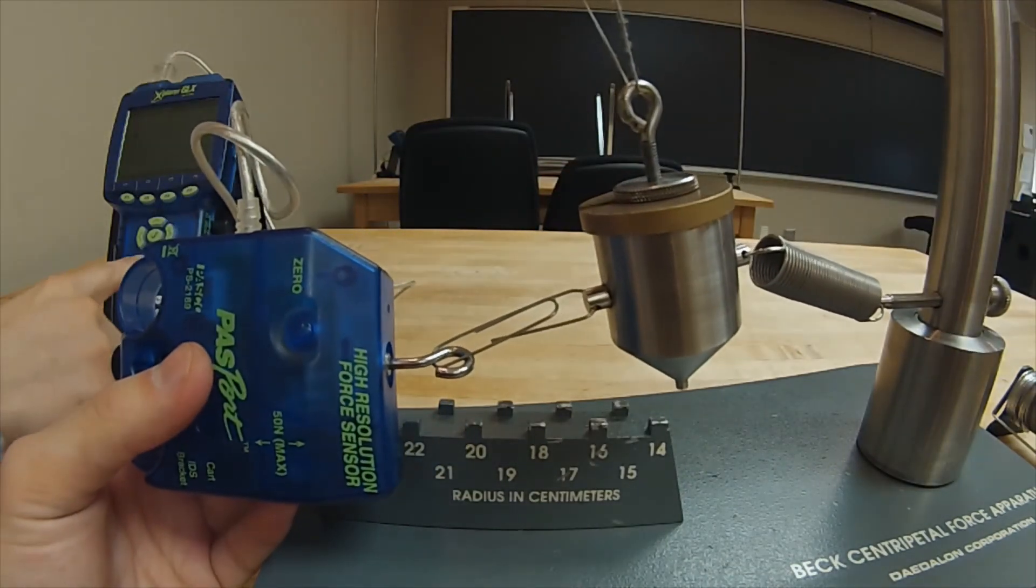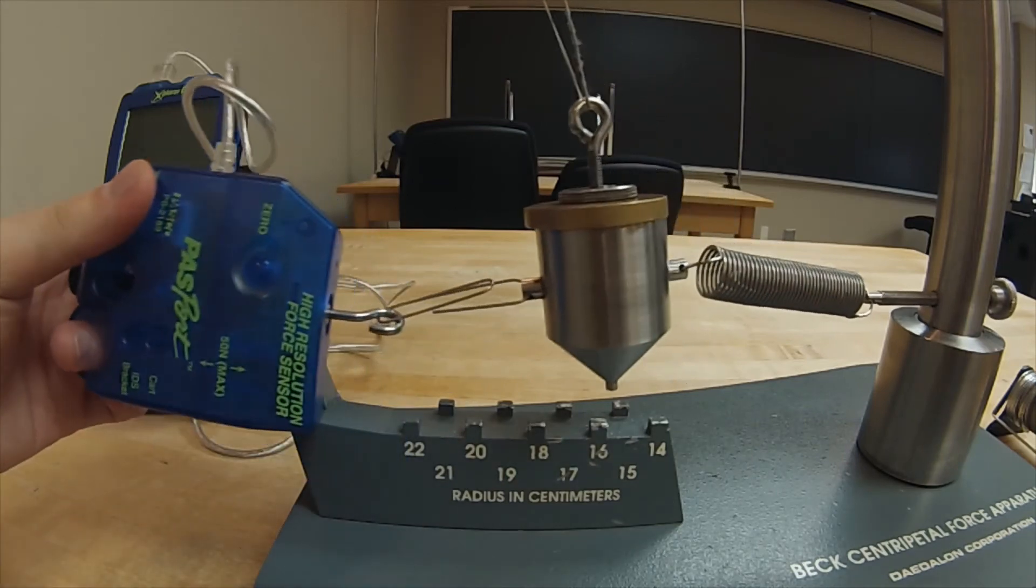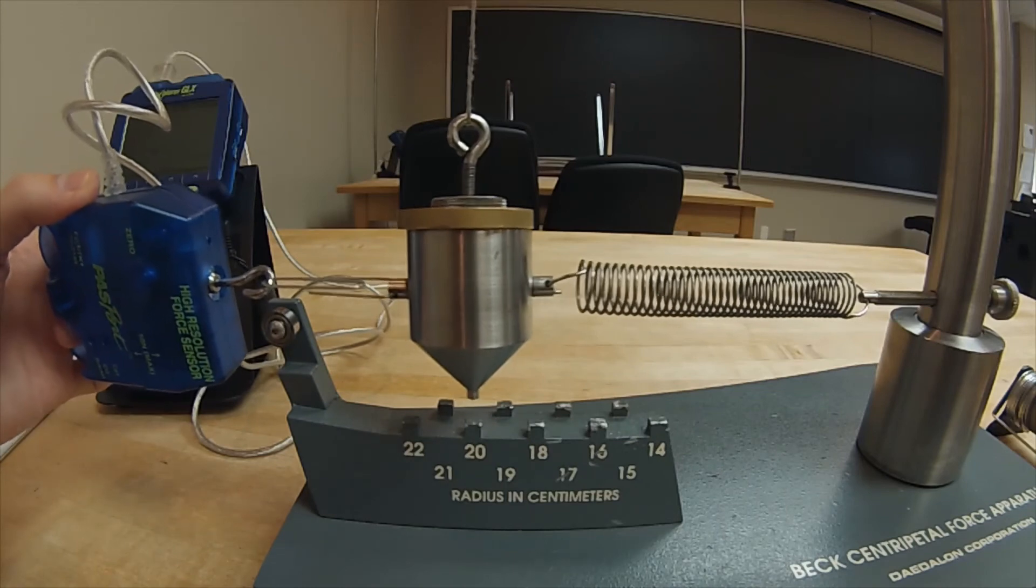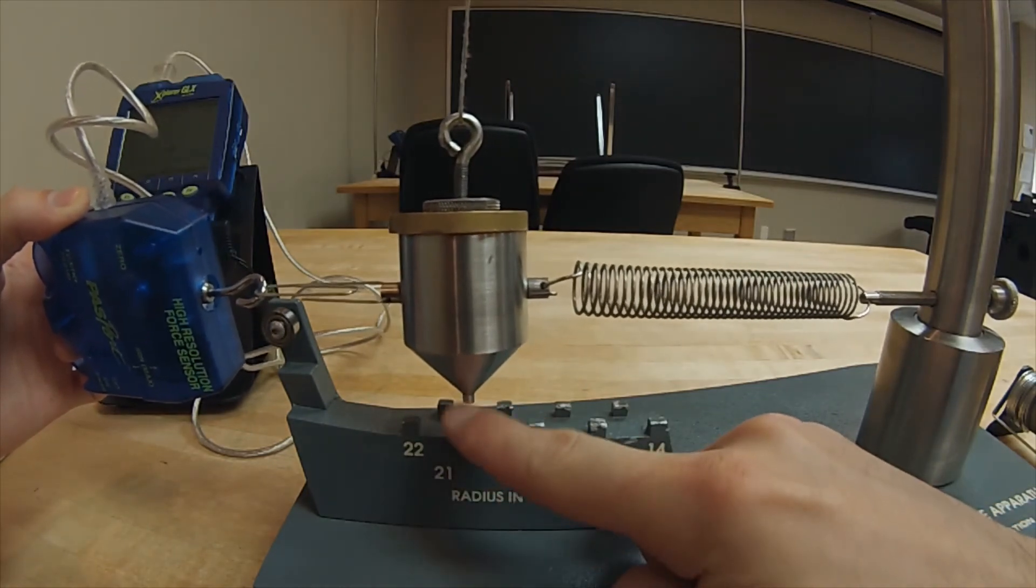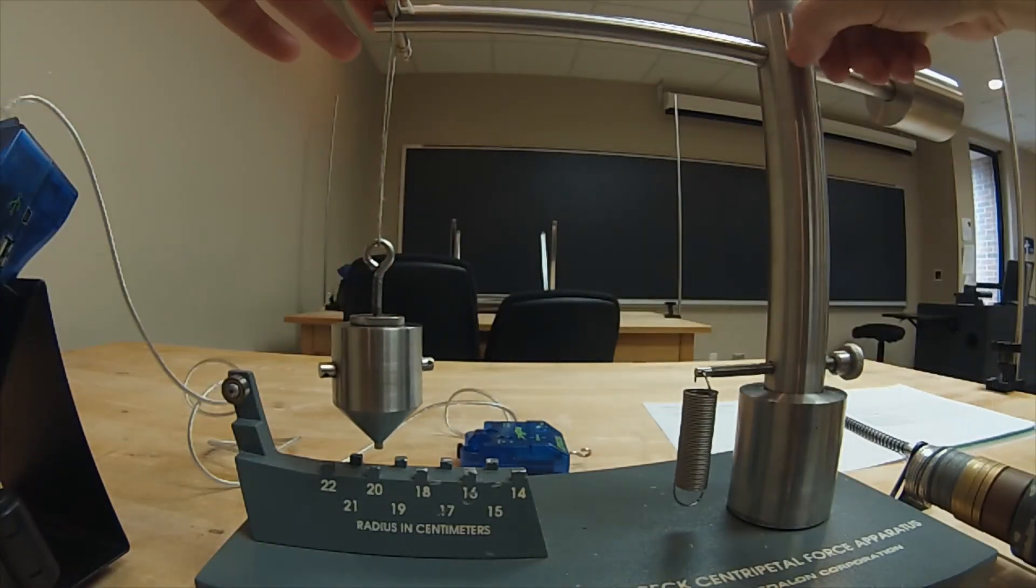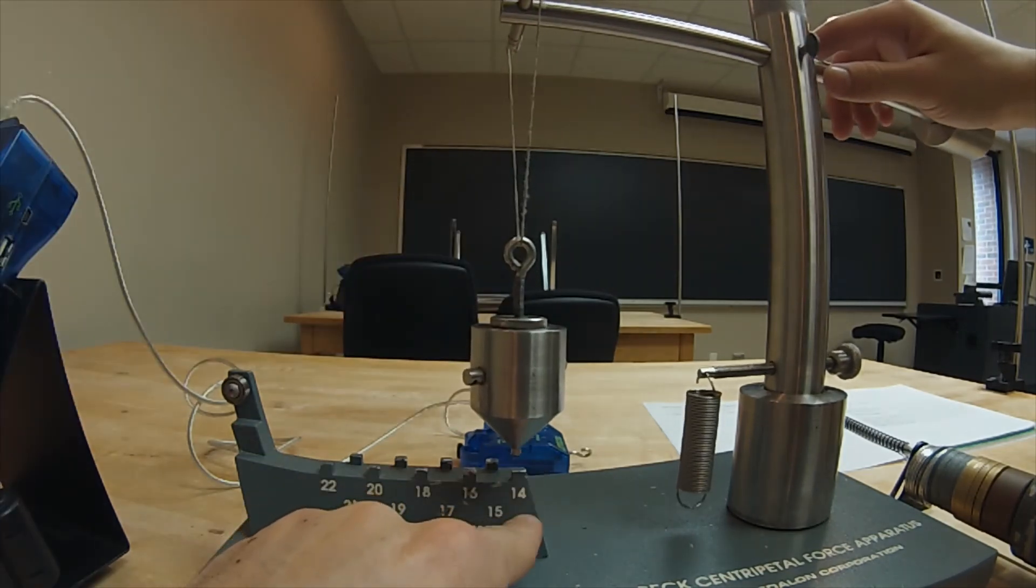Use a paper clip to attach the hook of the force sensor to the hanging bob. It is important that the force sensor remain horizontal during this measurement. Once you have completed recording the force required to stretch the spring, the second half of this experiment may be completed simply by changing the radial placement of the bob and completing all previously outlined steps.